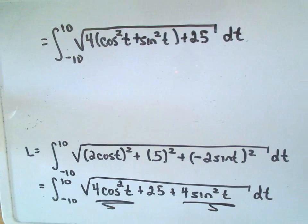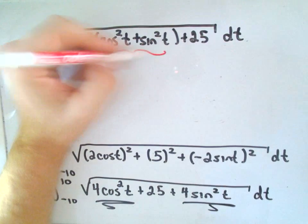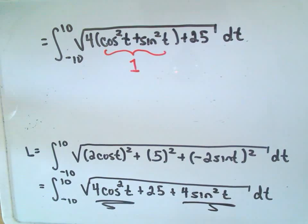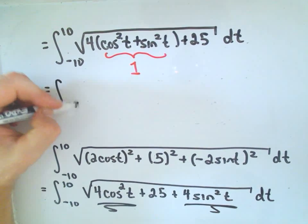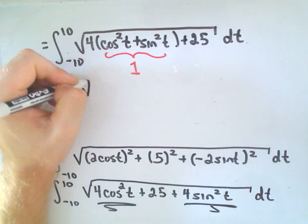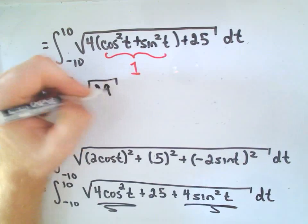We know that cosine squared plus sine squared is simply equal to 1. Really, underneath the radical, we have 4 times 1 plus 25, which would give you the square root of 29.